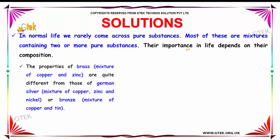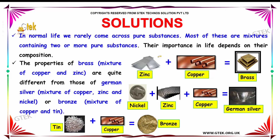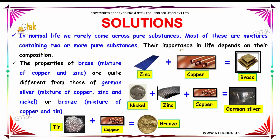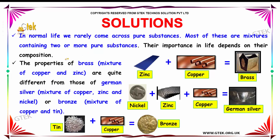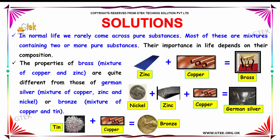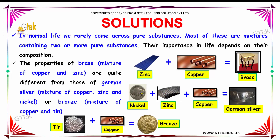In normal life, we rarely come across a pure substance — most of these are mixtures containing two or more pure substances. The properties of a mixture depend upon its composition. For example, brass, a mixture of zinc and copper, is quite different from German silver, which is a mixture of copper, zinc, and nickel, or bronze, which is a mixture of copper and tin.